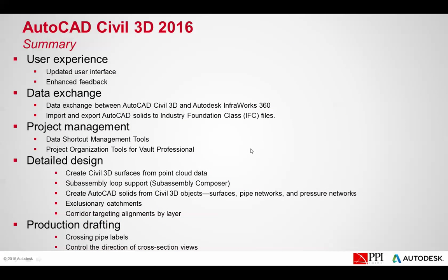In summary, the areas we're going to look at are: the updated user interface, data exchange between Civil 3D and Autodesk InfraWorks, data shortcut management, creating surfaces from point clouds, sub-assembly loop information, creating AutoCAD solids from Civil 3D objects, exclusionary catchments, corridor targeting by layer, cross-section pipe labeling, and controlling direction of section views. We'll touch on a few of these subjects due to time constraints.